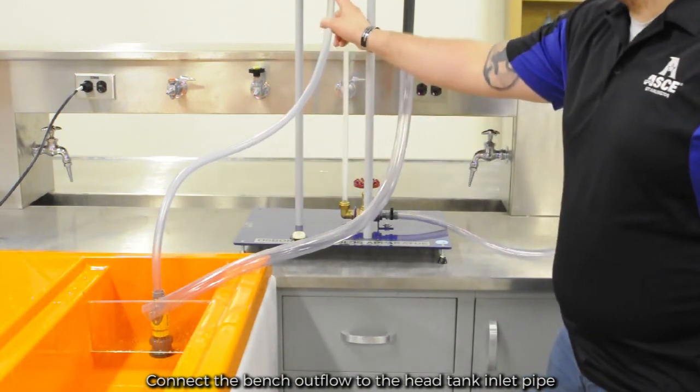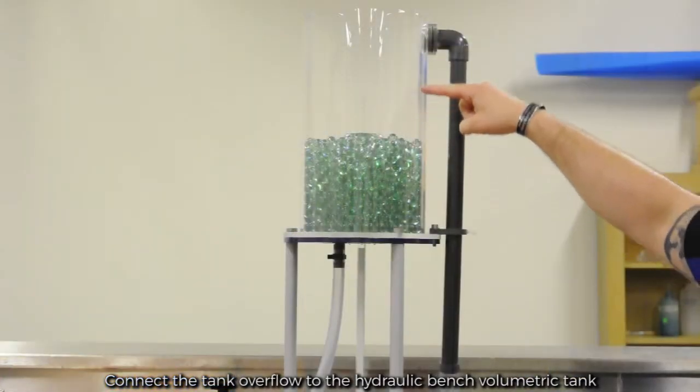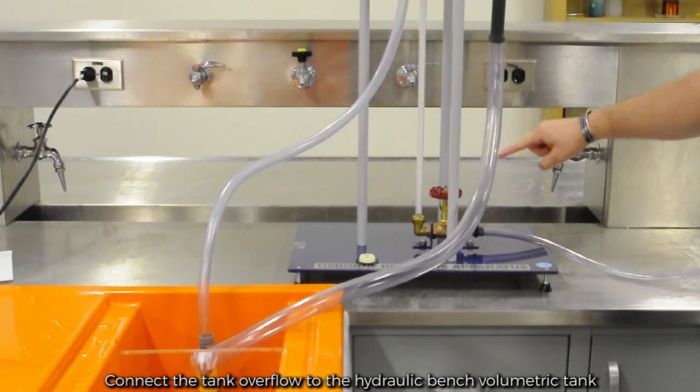Connect the bench outlet to the head tank inlet pipe. Connect the tank overflow to the hydraulic bench volumetric tank.